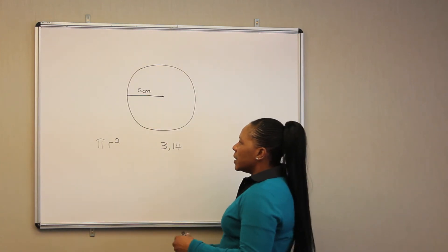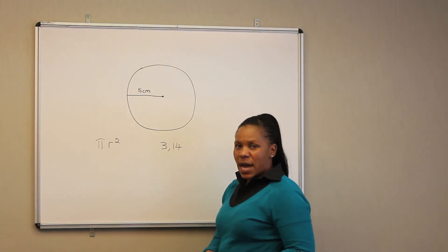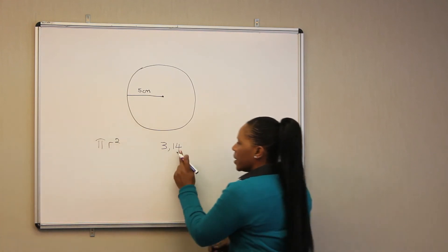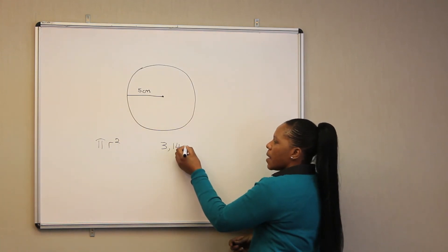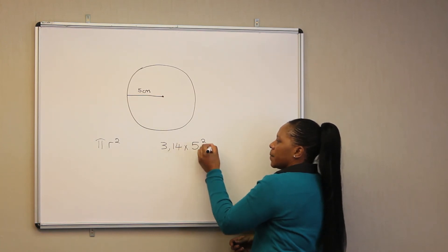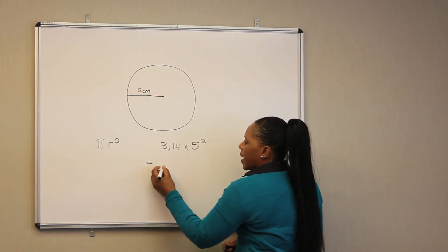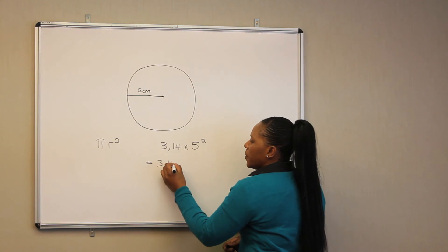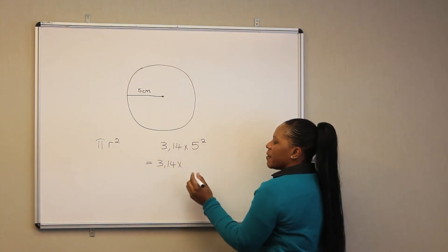Looking at this circle, it is five centimeters in diameter. So, we are going to say 3.14 multiplied by 5 squared, which is going to give us 3.14 multiplied by 5 squared equals 25.